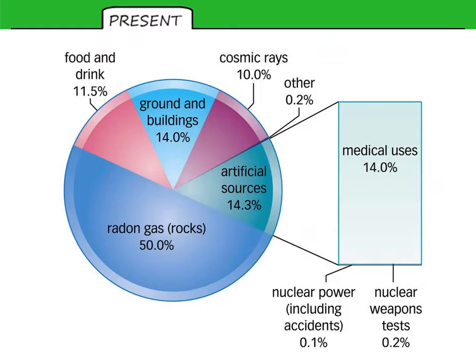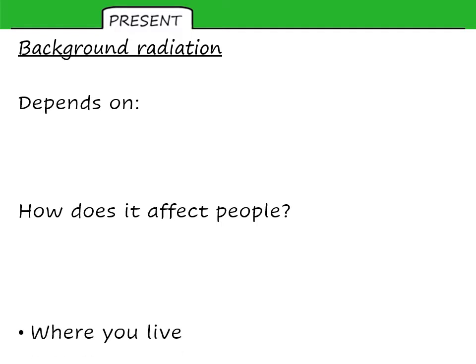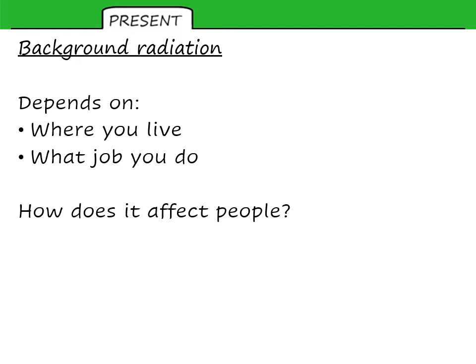This slide illustrates some examples. The vast majority of background radiation comes from rocks and a type of gas called radon, which is radioactive. Some comes from contamination in food and drink, some from isotopes found in the ground and buildings, and the rest from cosmic rays. A small proportion is from artificial sources, most of that from medical uses. A tiny amount remains from nuclear weapons tests in the 50s, 60s, and 70s, and from nuclear power.